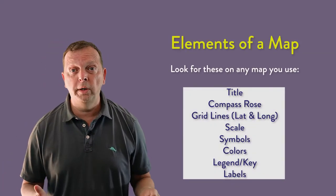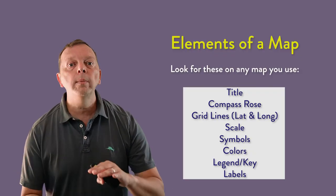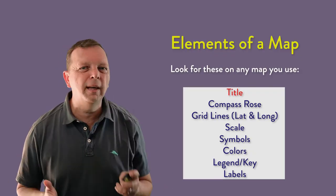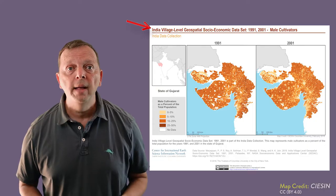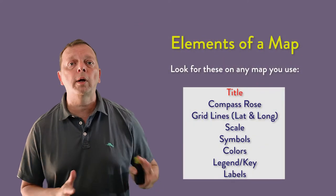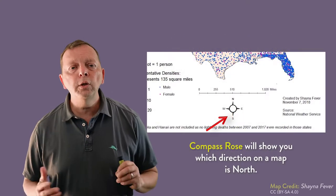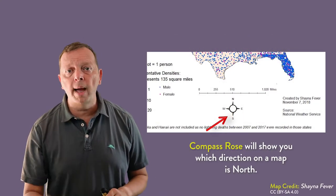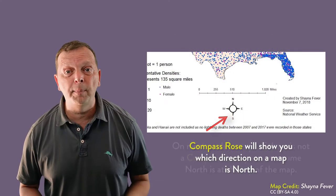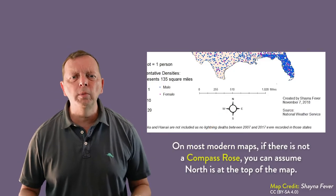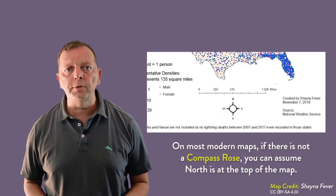Now, there are some other things you want to look for in any map you're using. While the order of what to look for really doesn't matter, I would always recommend to look at the title first. It's going to give you an idea of what the map's about. Also on the map, you should always look for a compass rose and maybe look for grid lines of longitude and latitude. These will be able to tell you which direction on the map is supposed to be north. And if you don't have a compass rose, you could pretty much assume that the top of the map is north on most modern maps.